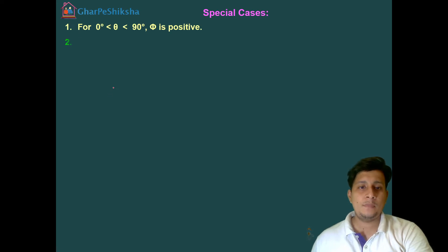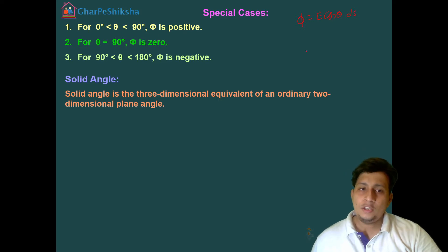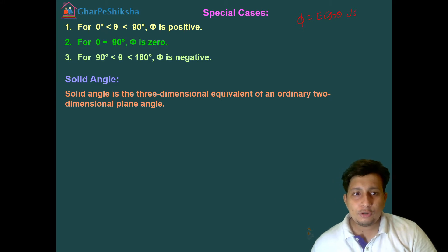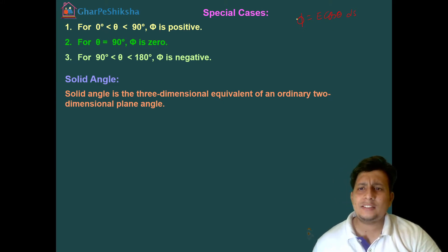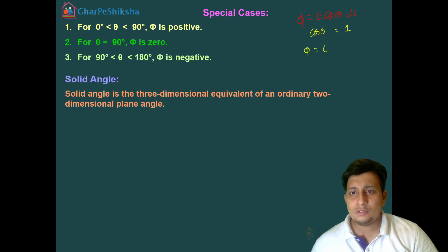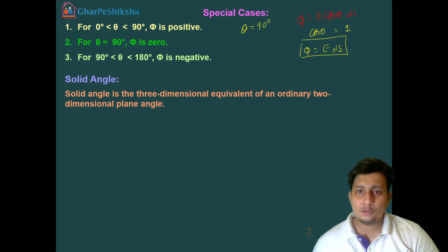So electric flux phi is equals to E cos theta ds. Now suppose if we change the value of theta — 3 cases are given. The first case is when theta is between 0 and 90. If theta equals 0, cos 0 is 1, so phi equals Eds. Similarly, when theta equals 90 degrees, cos 90 is 0, so phi equals 0.